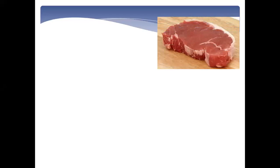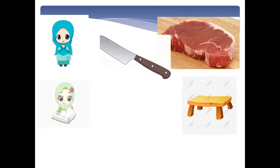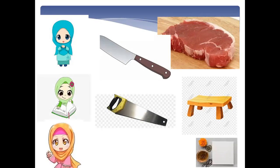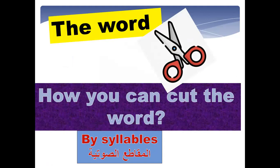Please, who can tell me how we can cut the meat? — By knife. How we can cut the table or the wood? — By saw. How we can cut the paper? — By scissors. So how we can cut the word? — By syllables! Al-Maqata' al-Sawtiya.